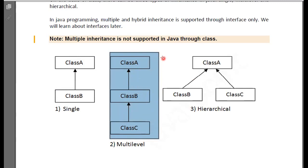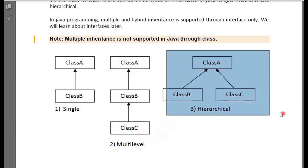For hierarchical inheritance, two or more child classes will be accessed from a single parent class. So if you have classes C and D, all of these classes will be inherited from one parent class.